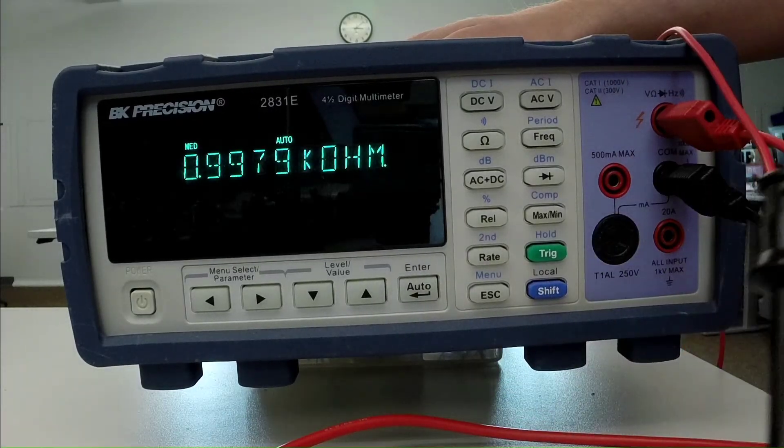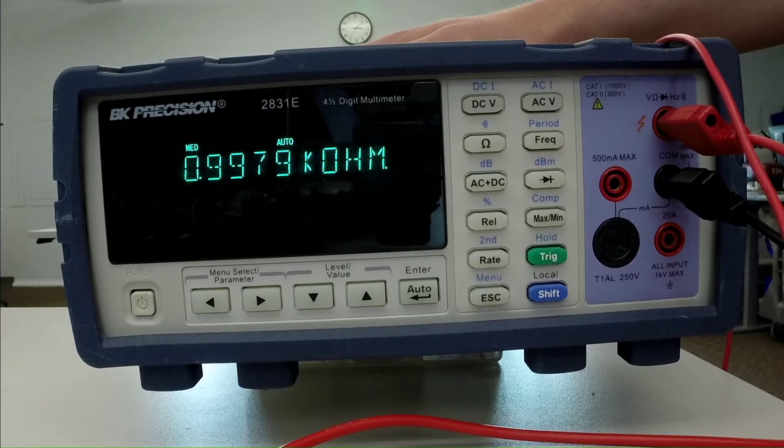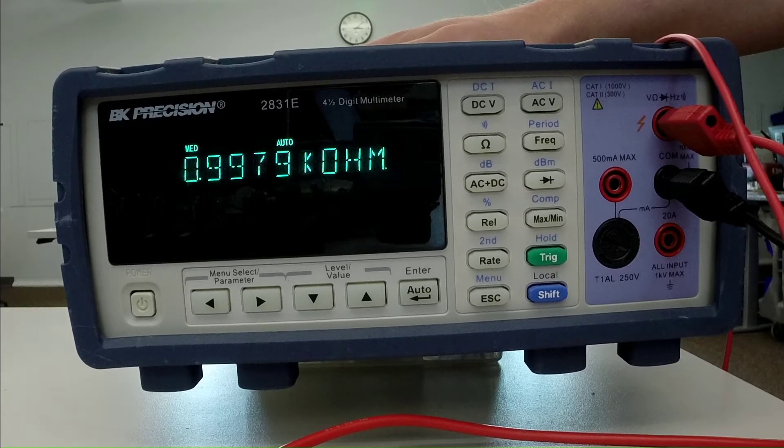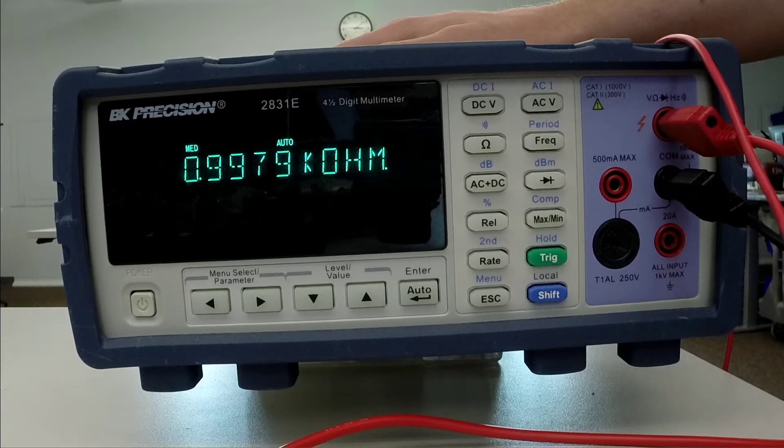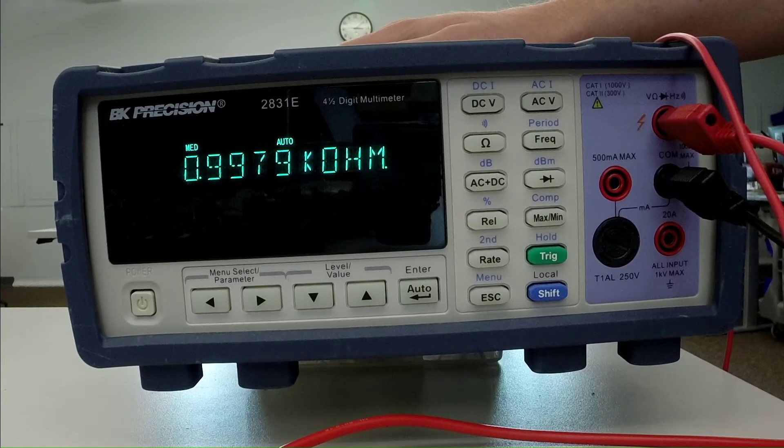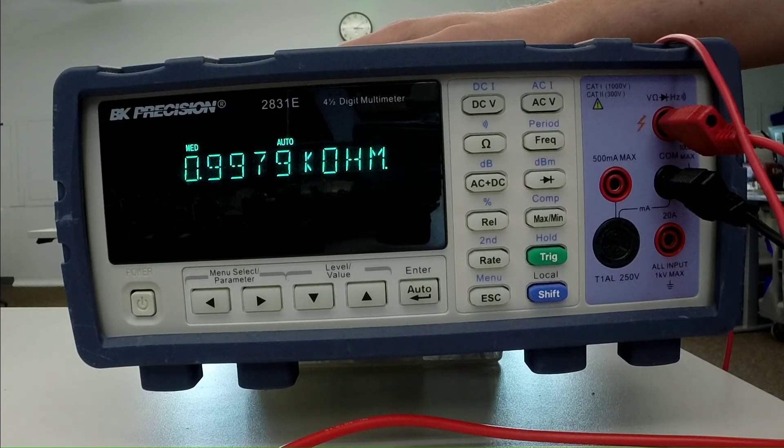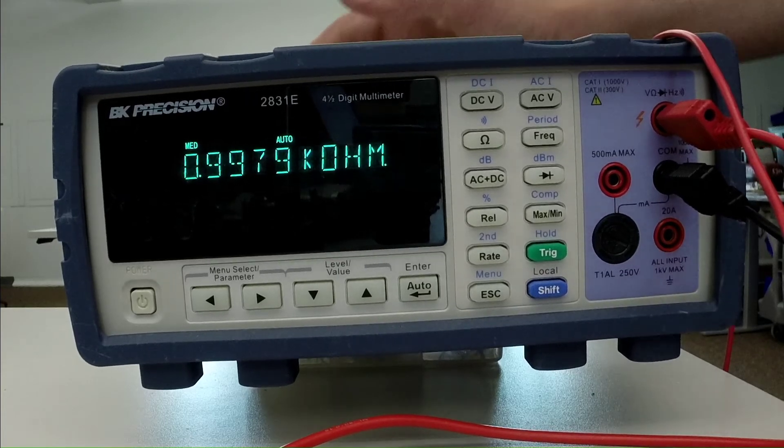So that is a basic intro to your benchtop multimeter, which should cover about 90% of the situations you find yourself in the lab of how to use it. So give that a go and use this as a really great tool for troubleshooting your circuits and confirming that you're getting the correct voltages where you think you are or if you have the correct resistance components that you're planning on using in your circuit.